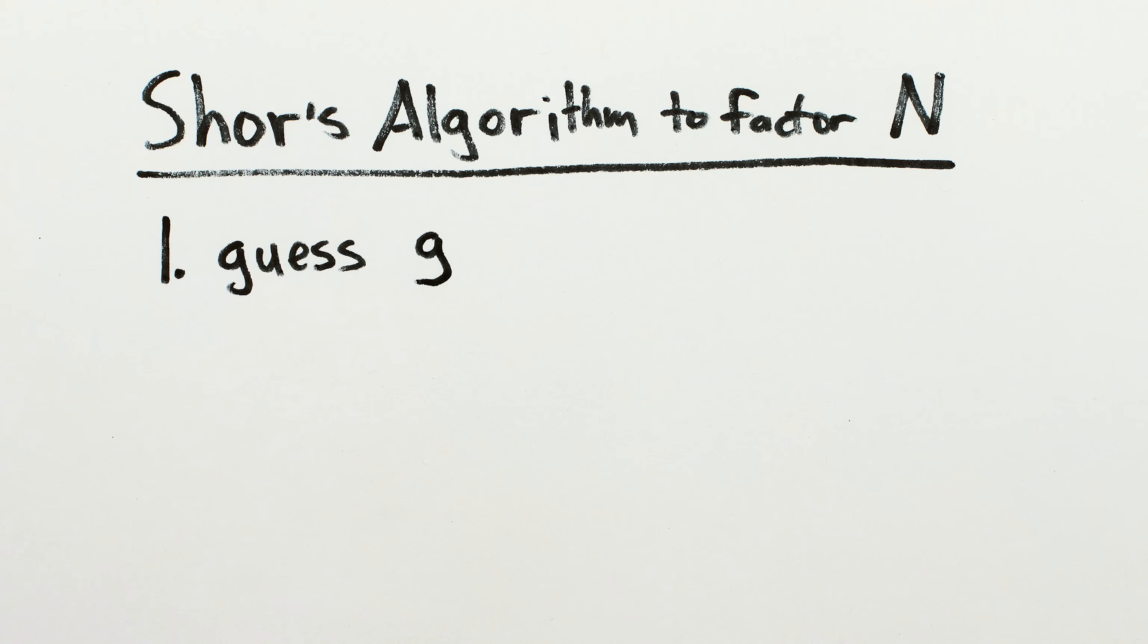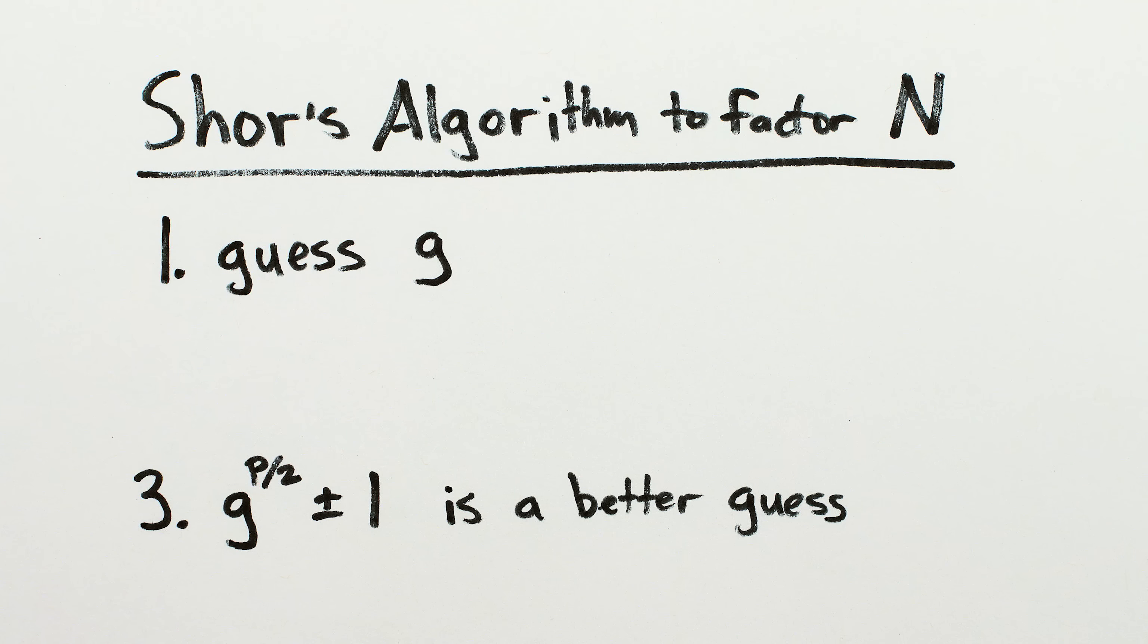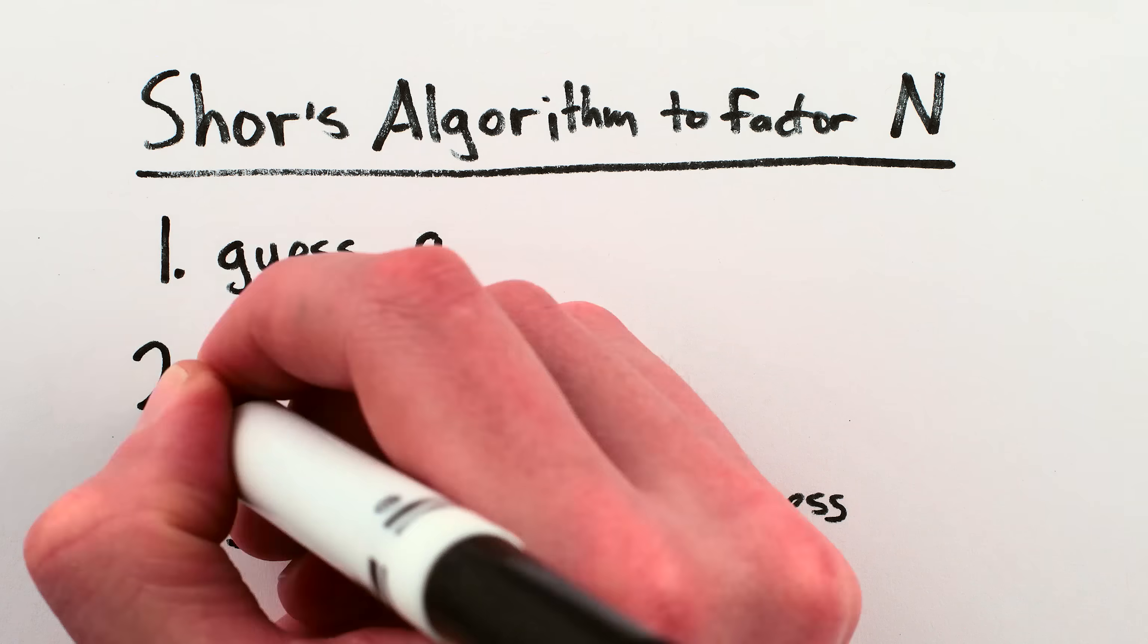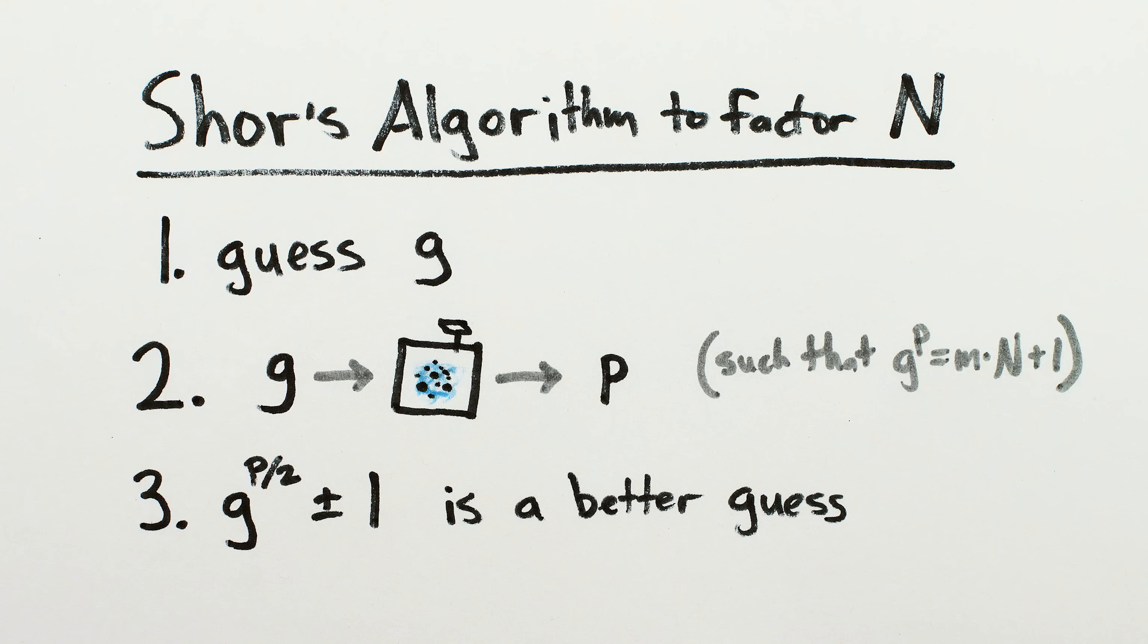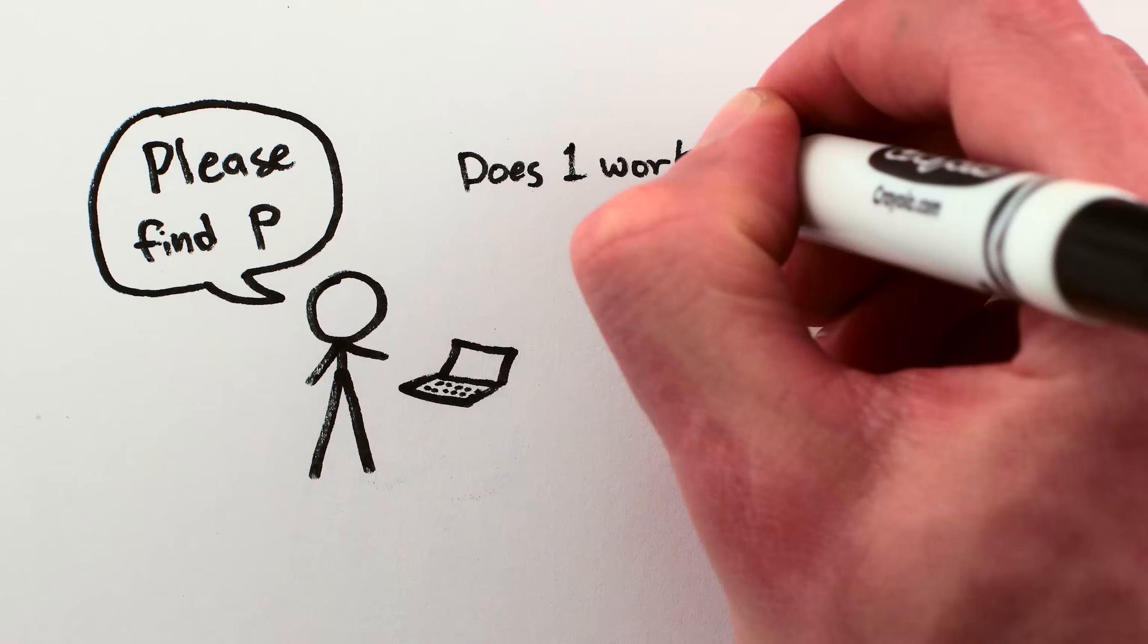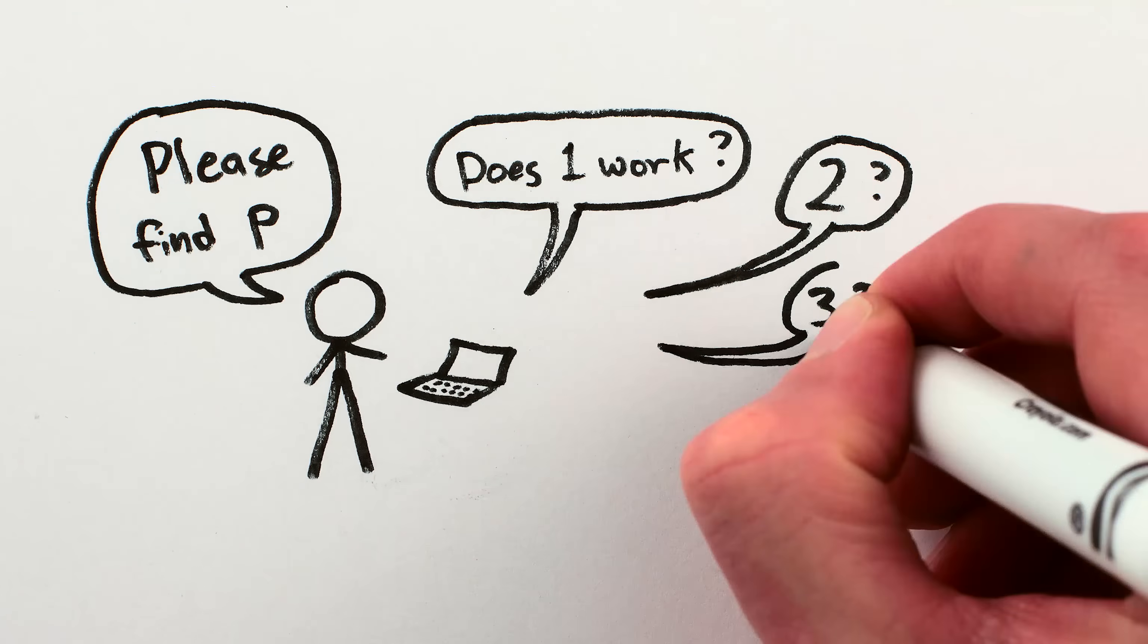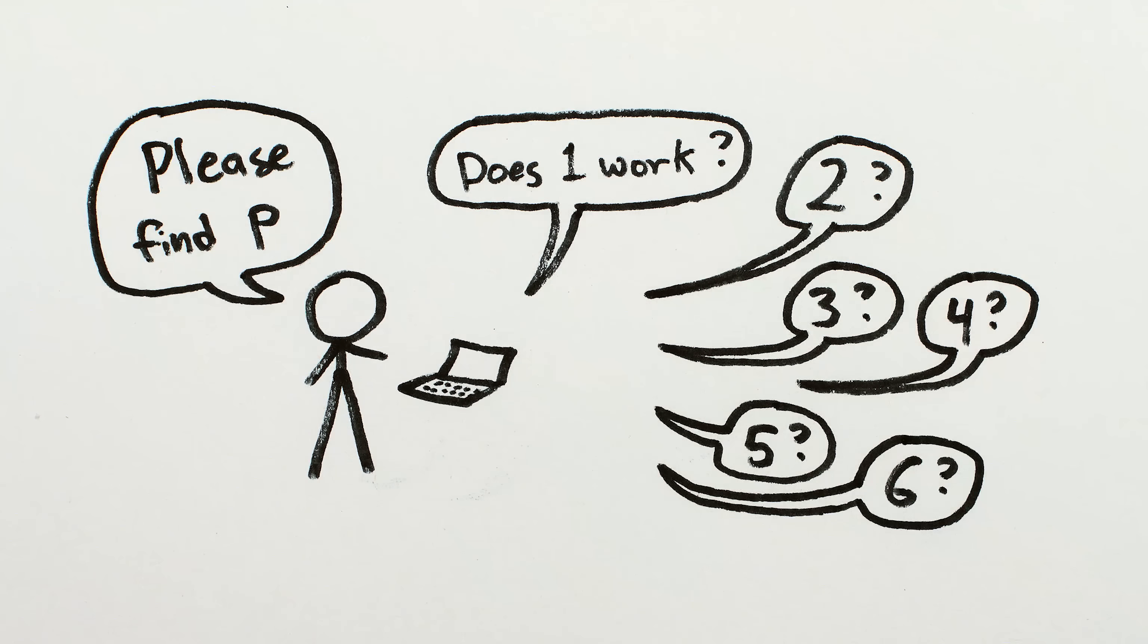For any crappy guess at a number that shares factors with n, that guess to the power of P over 2 plus or minus 1 is a much, much better guess if we can find P. And we can find P almost immediately with a single, if complex, quantum computation. A normal computer would have to go one by one through all possible powers, which would take an incredible amount of time for any really really big number like the ones used in encryption, since P could be almost any number up to n.